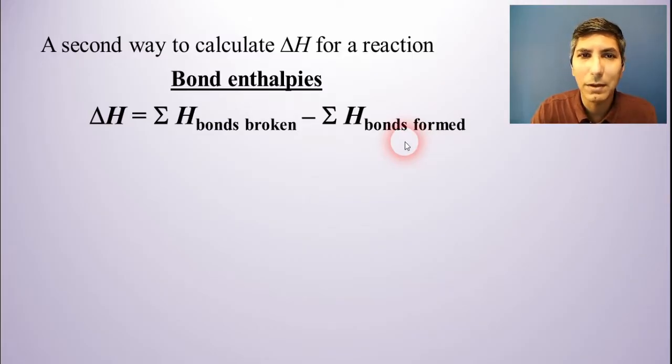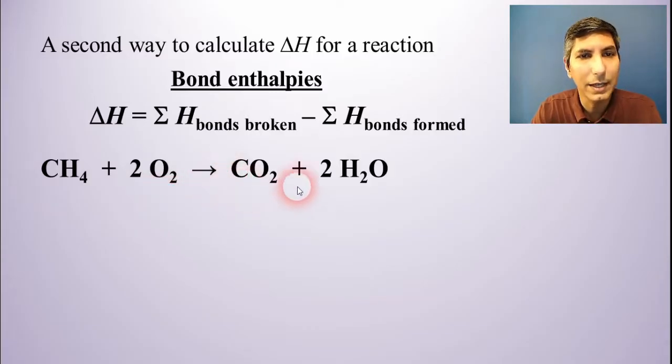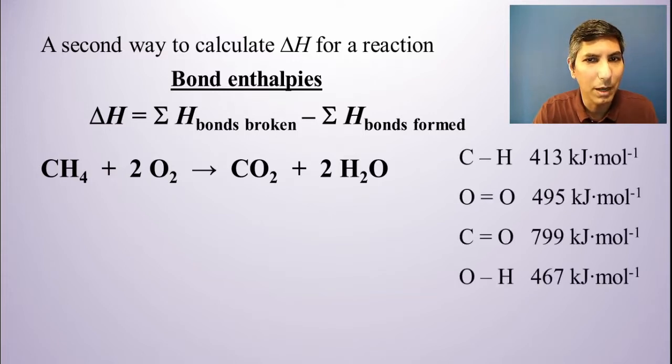Now how do we do this? Well, let's try a very common reaction. Here we have methane, and one mole of methane is being reacted with two moles of oxygen gas to produce one mole of carbon dioxide and two moles of water. Now in order to do this problem, to calculate delta H using this methodology, we have to have the structures. We have to understand the bond structures and the molecular geometries of these molecules. So this goes all the way back to unit two when we drew these Lewis electron dot diagrams.